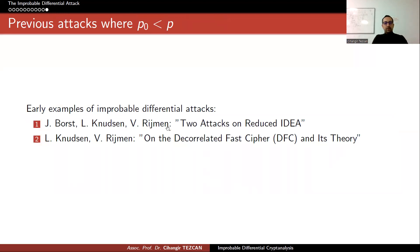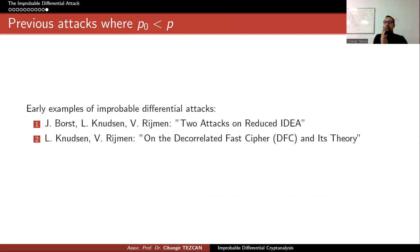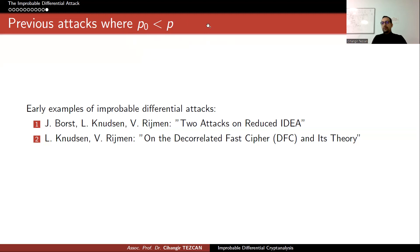Looking back at previous attacks in literature, we observed that people performed specific attacks on ciphers where p0 is actually less than p — so this kind of thing can happen. In linear cryptanalysis, for a random permutation that property occurs with probability one-half. For the distinguisher, we have one-half plus or minus some bias. If it is plus, then p0 is larger than p. If it is minus, then p0 is less than p. So in literature we already have this kind of scenario — this framework is the formal way of explaining all such attacks in general.